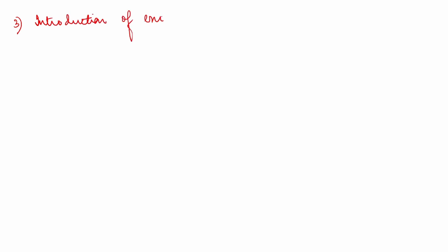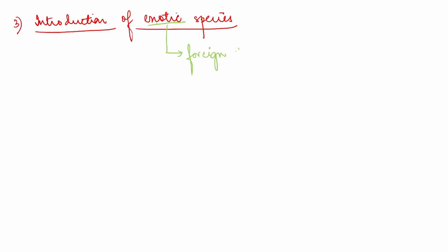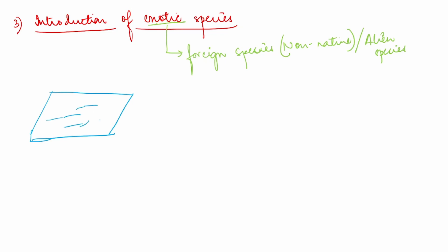Third is introduction of exotic species. Exotic means foreign — non-native; you can also call it alien species. Sometimes, say, there is a lake or river, and initially there is no foreign species here. What happens after some time — because of some accidental purpose — is that a foreign species gets introduced.